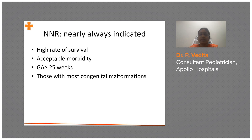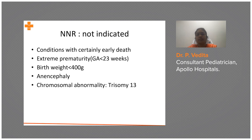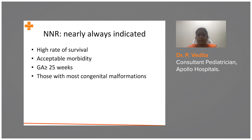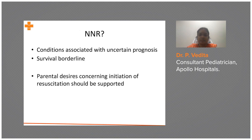NRP is nearly always indicated when there is a high rate of survival. Even at 24 weeks, we resuscitate because science has advanced enough to support the baby. If morbidity is acceptable — for instance, gestation more than 25 weeks — or with most congenital malformations such as congenital diaphragmatic hernia or congenital cardiac diseases like TAPVC where cardiac surgeries are available, we resuscitate to achieve normal growth.